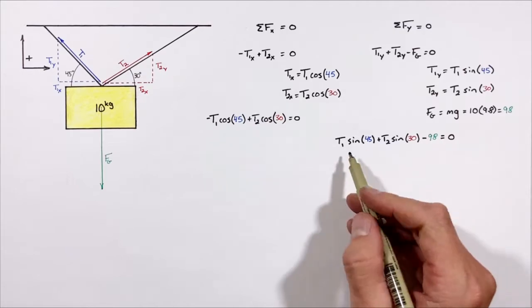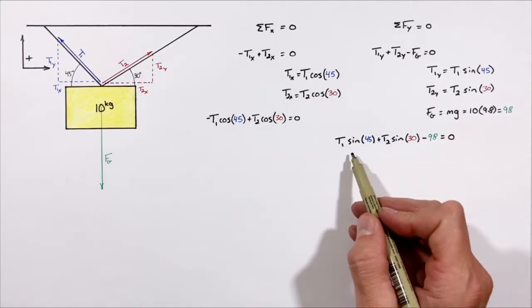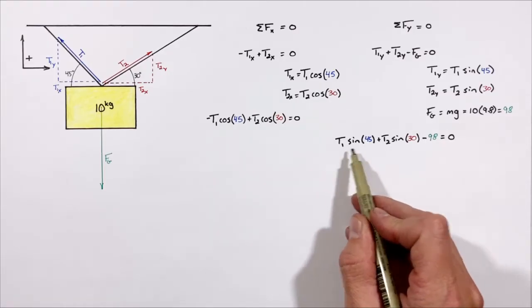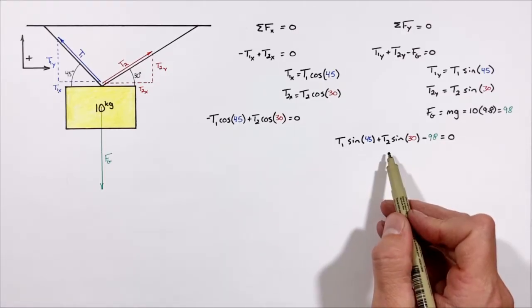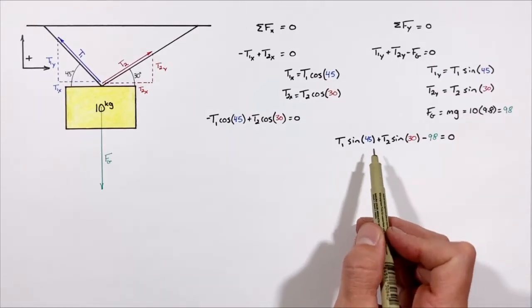Subbing these terms into Newton's second law within the y-axis, we'll see this equation which relates t1, t2, and the weight to one another within the y-axis. But again, you'll notice we have two unknowns within this equation. But what this has left us with now are two equations and two unknowns.